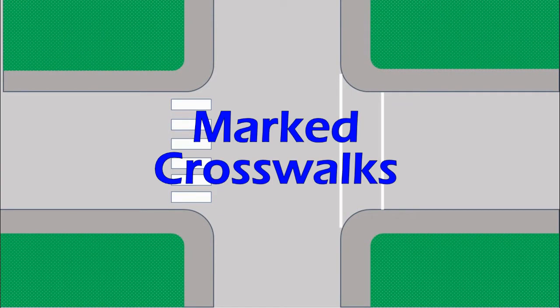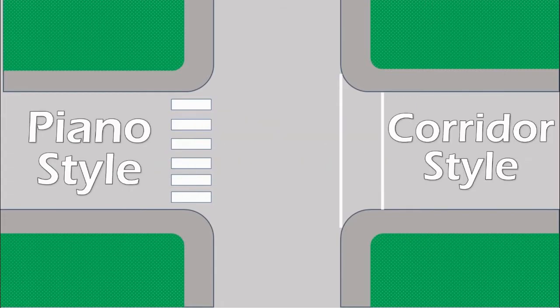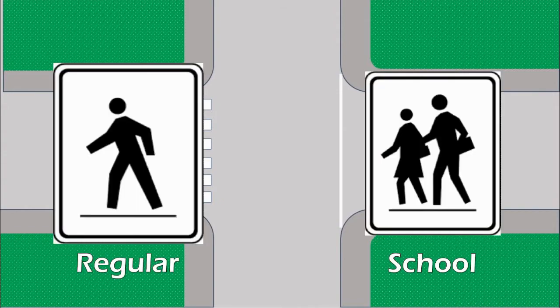Even though not all crosswalks are marked, let's look at some signs and markings that indicate crosswalks when they are marked. For pavement markings, we can either have the piano slash keyboard style crosswalk or the corridor style crosswalk. Let's look at two different styles of crosswalk signs. On the left, we have the regular crosswalk sign. On the right, the school crosswalk. Even though they are different, they both mean the same thing — we must yield to pedestrians at all times inside those crosswalks.